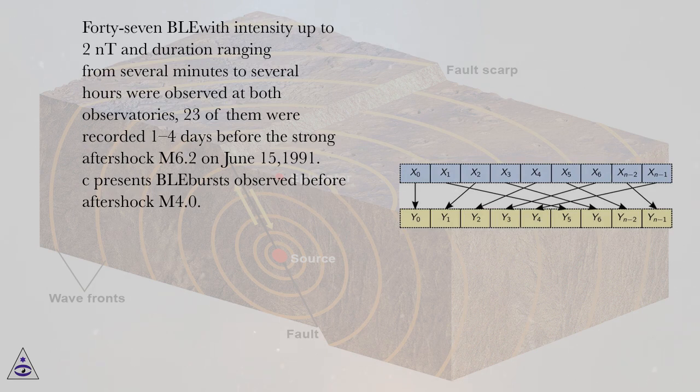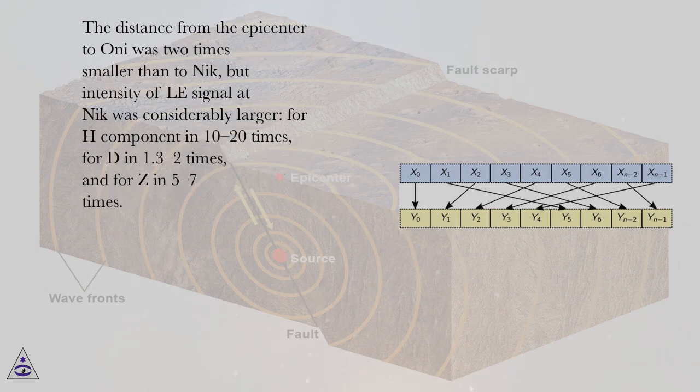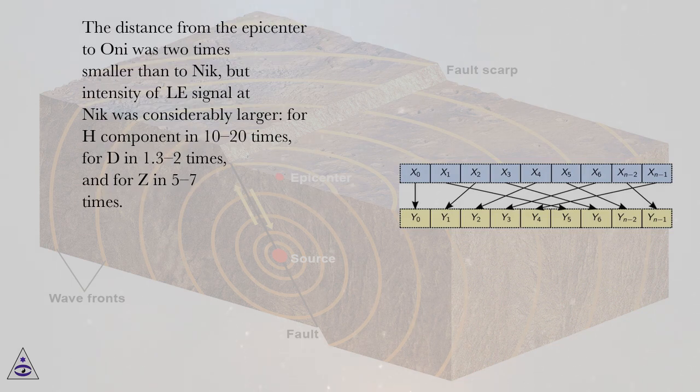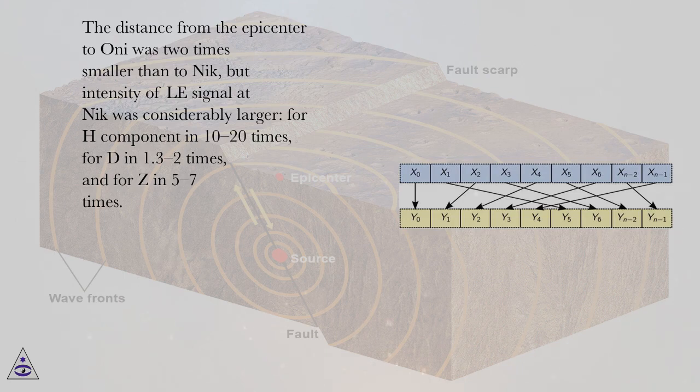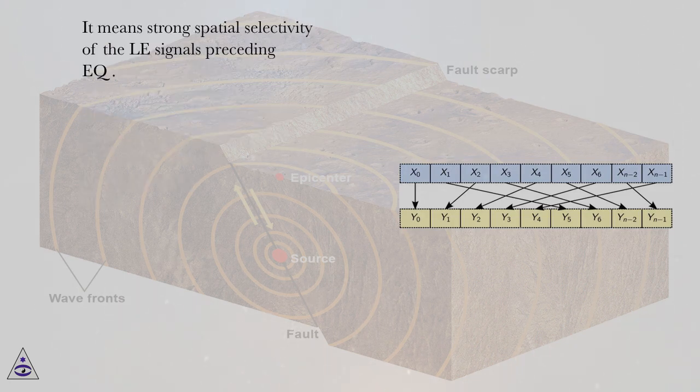Presence of BLE bursts observed before aftershock M4.0. The distance from the epicenter to Oni was two times smaller than to Nik, but intensity of the signal at Nik was considerably larger, for H component in 10 to 20 times, for D in 1.3 to 2 times, and for Z in 5 to 7 times. It means strong spatial selectivity of the ULF signals preceding EQ.